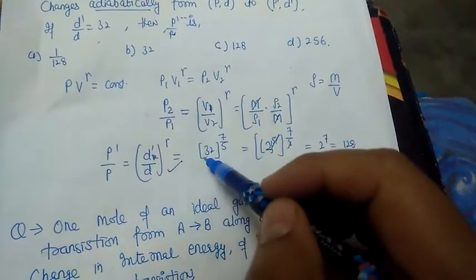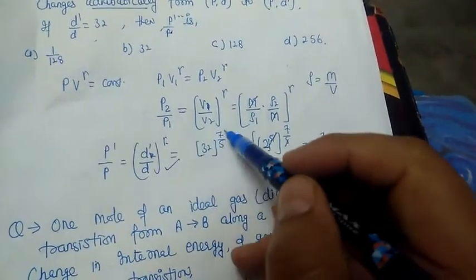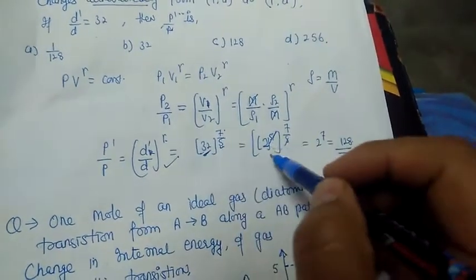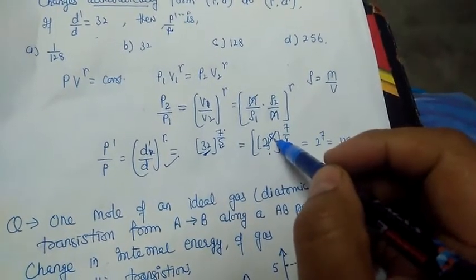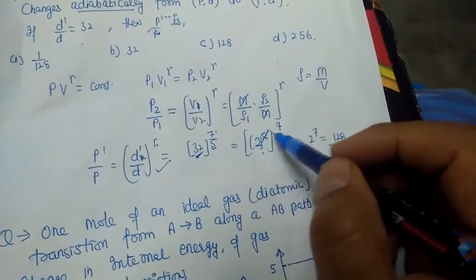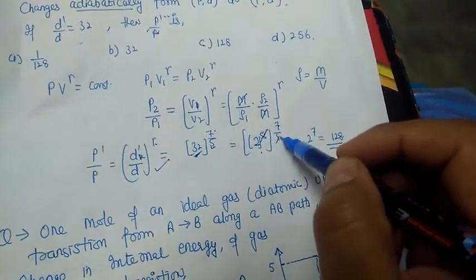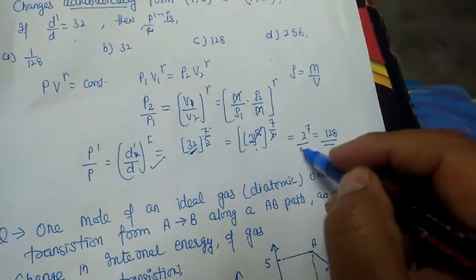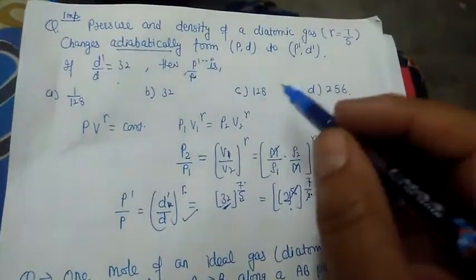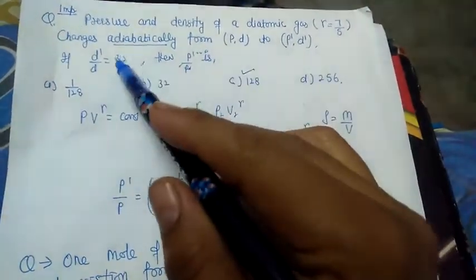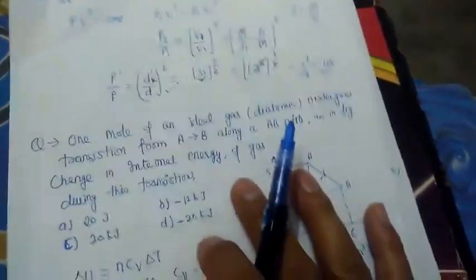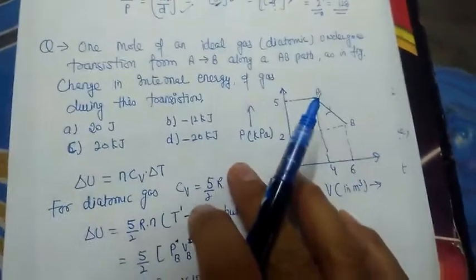Substituting the density ratio of 32 and γ = 7/5: P'/P = 32^(7/5). Writing 32 = 2⁵, we get (2⁵)^(7/5) = 2⁷ = 128. So the ratio of final pressure to initial pressure is 128, which is the correct answer.